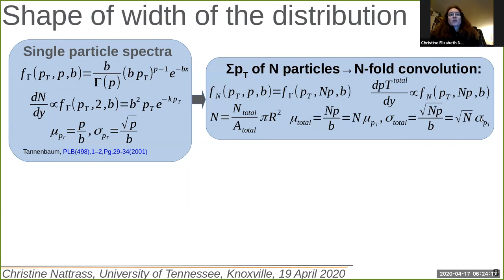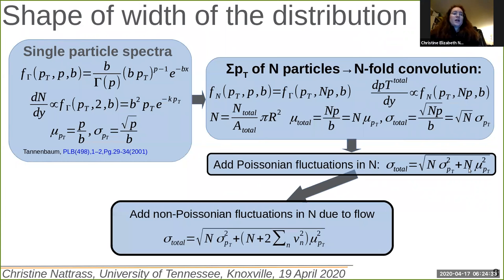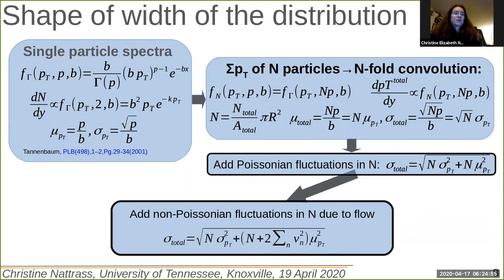When you're looking at an event sample, you are not always drawing the same number of particles — likewise for our random cones. When you add in these non-Poissonian fluctuations in the number, you get an extra term due to fluctuations in the number. In a heavy ion collision, we add non-Poissonian fluctuations due to flow. The form shown here makes an assumption that the VN are uncorrelated with each other, and that the only effect is fluctuations in the number of particles in different orientations relative to the reaction plane.